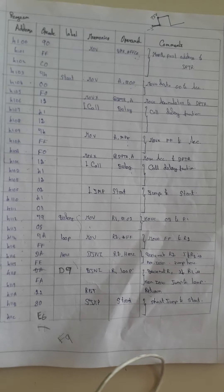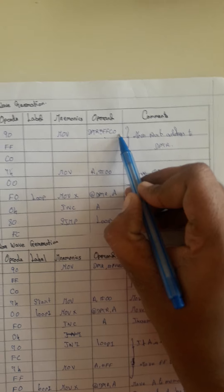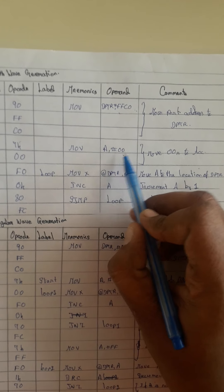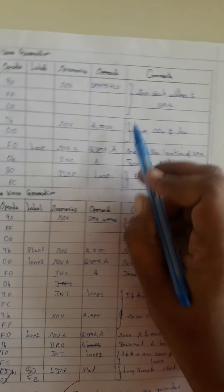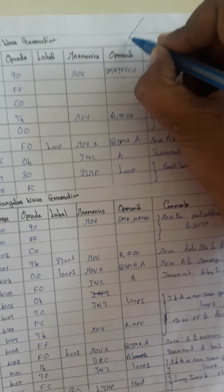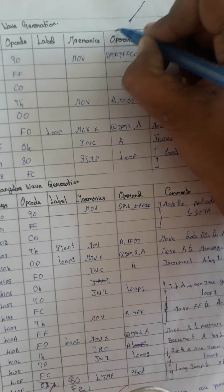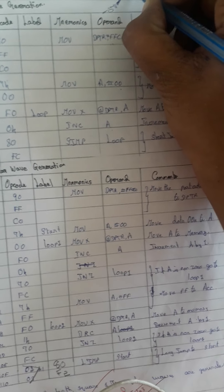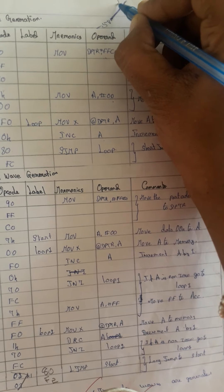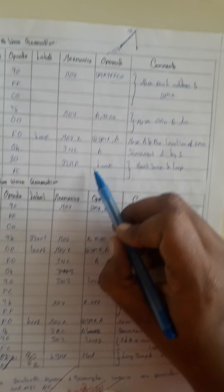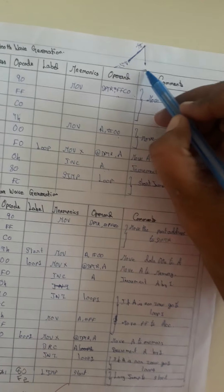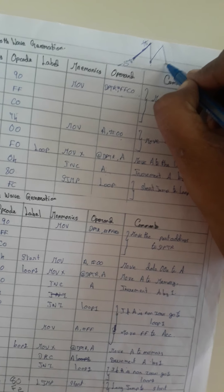For the sawtooth waveform, we initialize DAC port address FFC0, move 00 to the accumulator, then move that 00 to the address. We then increment the accumulator. From 00 (minus 5V), it increments, and after reaching FF — which is plus 5V — it automatically wraps back to 00, since we are using an 8-bit DAC. Using S jump loop, the incrementing continues to generate the sawtooth waveform.